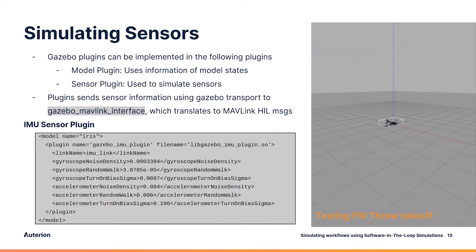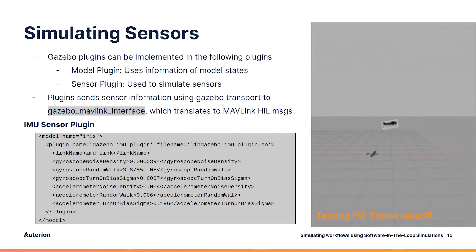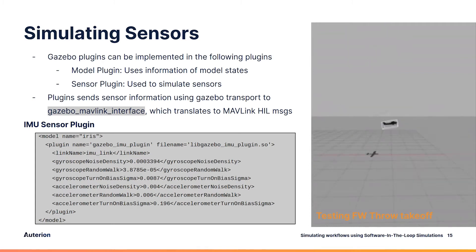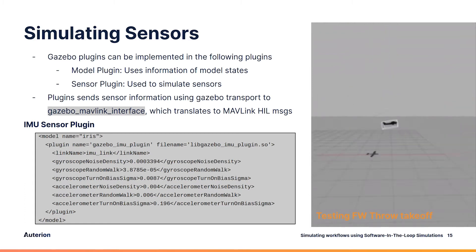Sensors are implemented either with a model plugin or a sensor plugin in Gazebo. A model plugin uses information of model states, while a sensor plugin uses the sensor class of Gazebo. All these plugins send their information to the Gazebo MAVLink interface, which translates them into the MAVLink HIL message that gets sent to the flight stack.